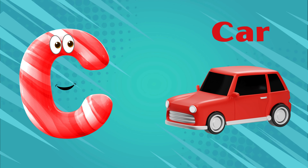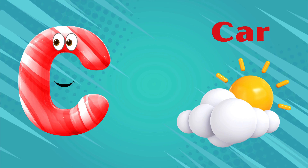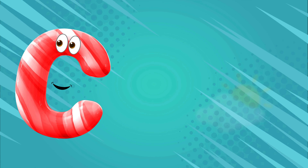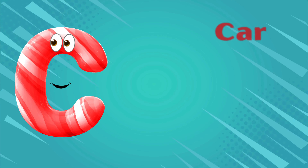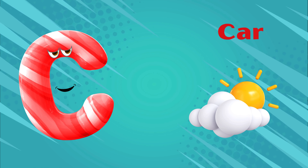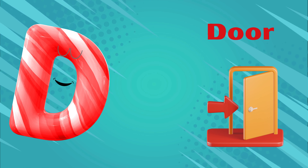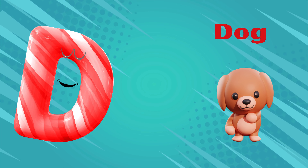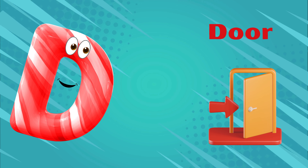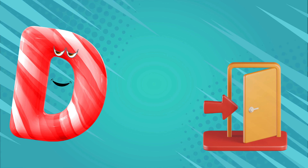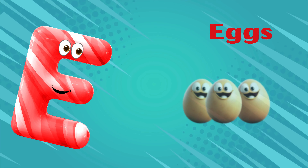C is for car, c-c-car. C is for cloud, c-c-cloud. C is for c-c-c-car. C is for c-c-c-cloud. D is for door, d-d-door. D is for dog, d-d-dog. D is for d-d-d-door. D is for d-d-d-dog.